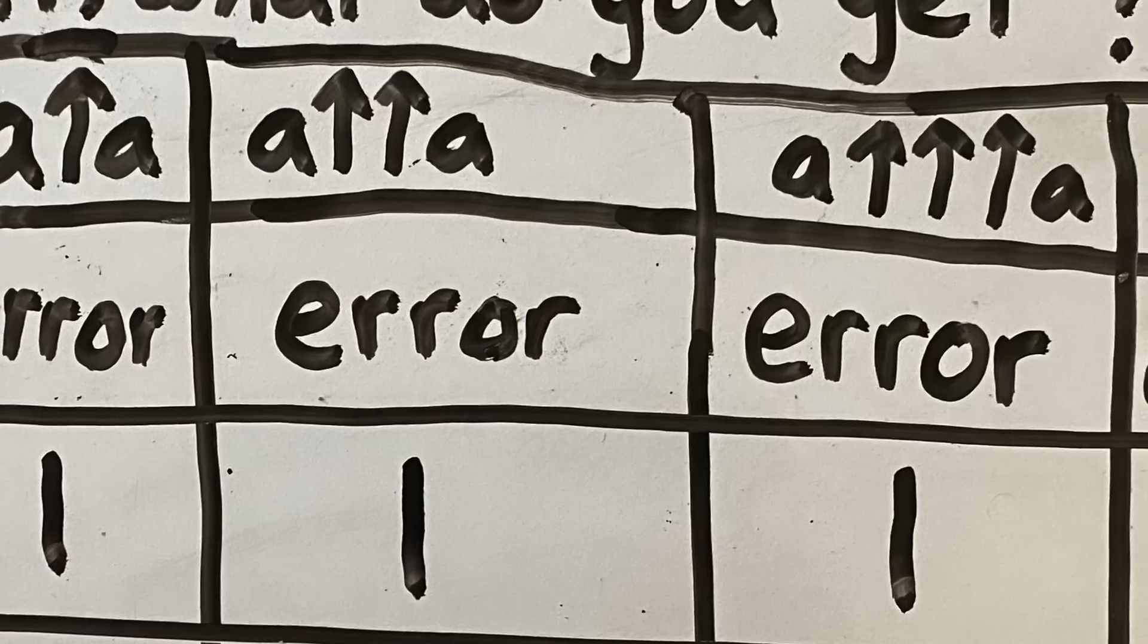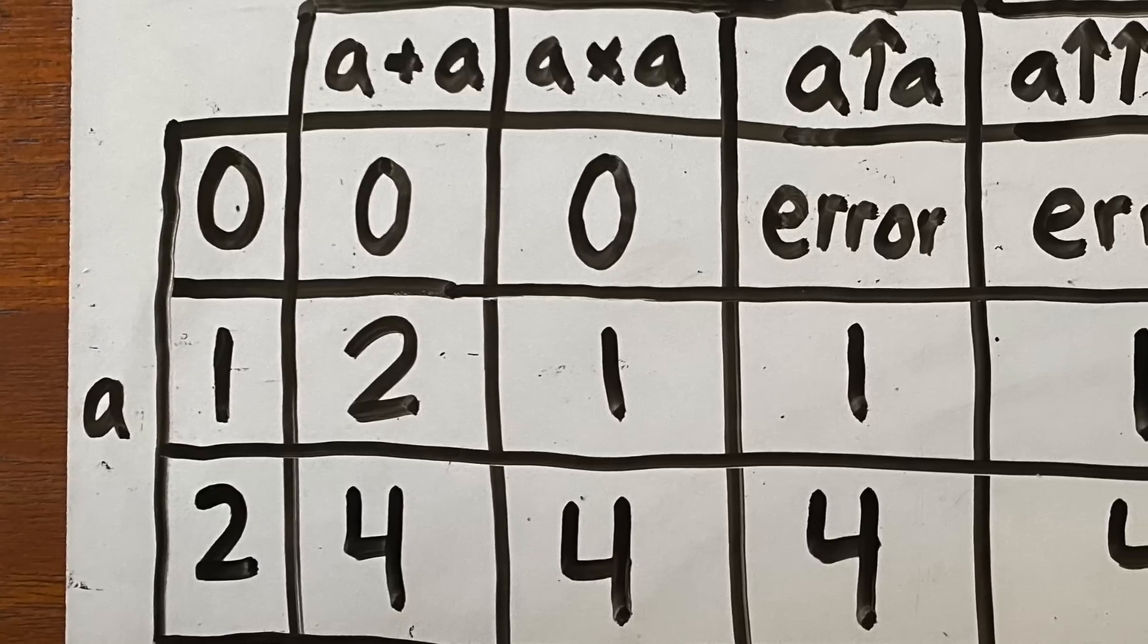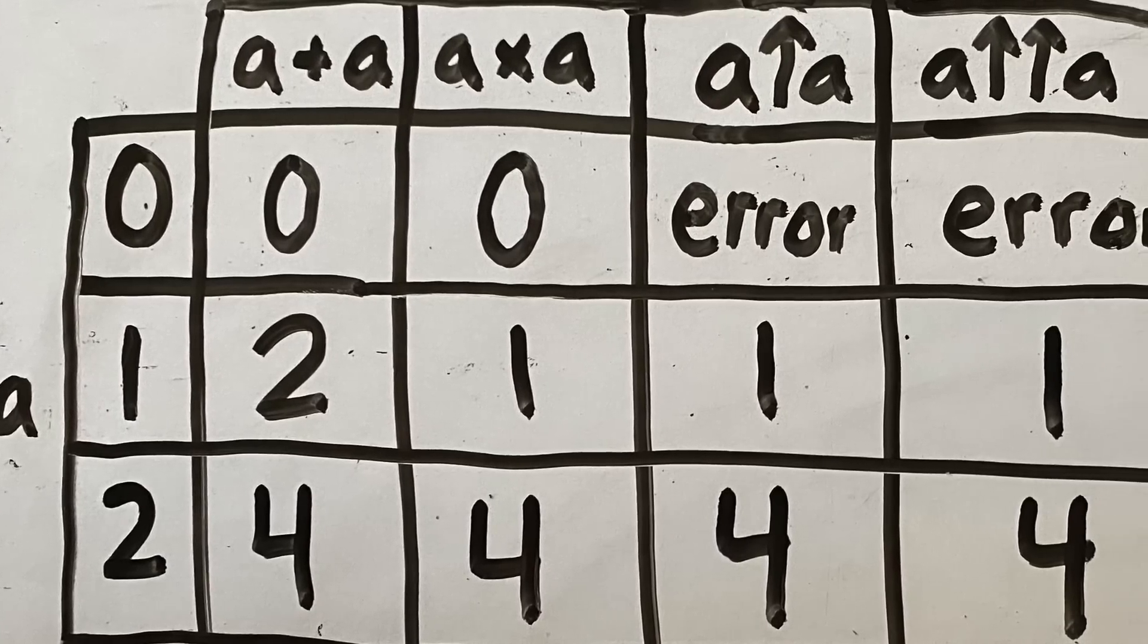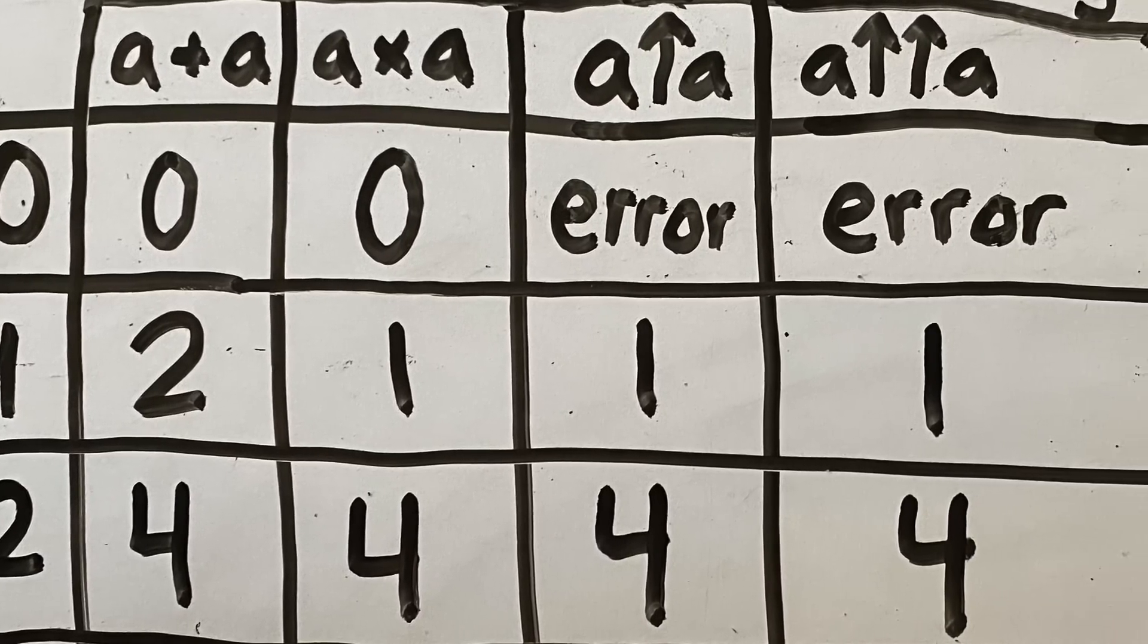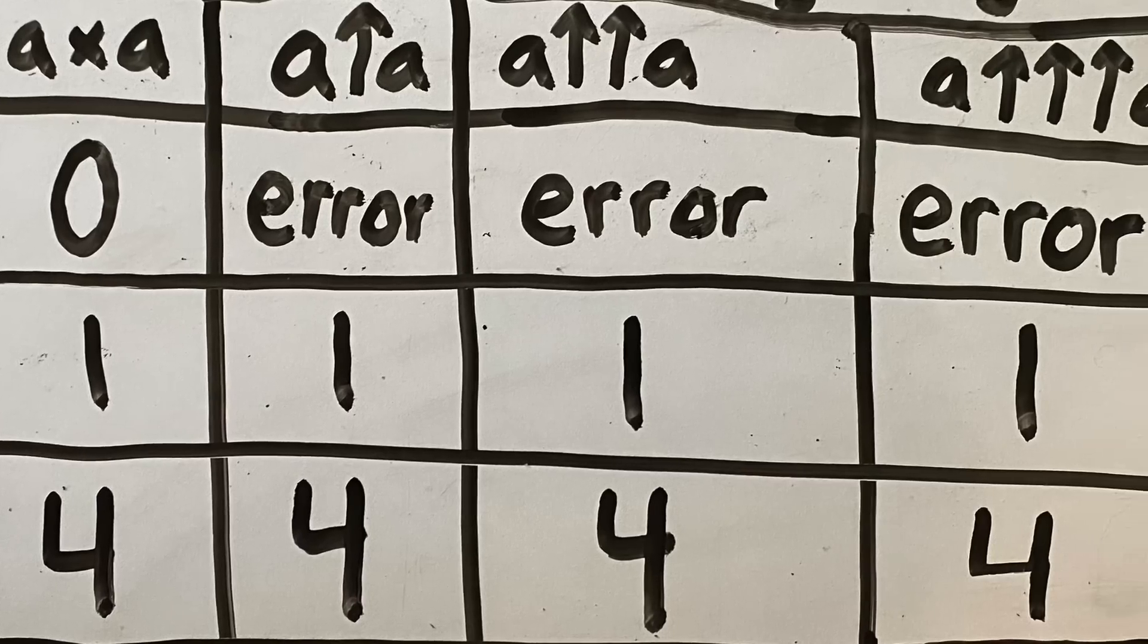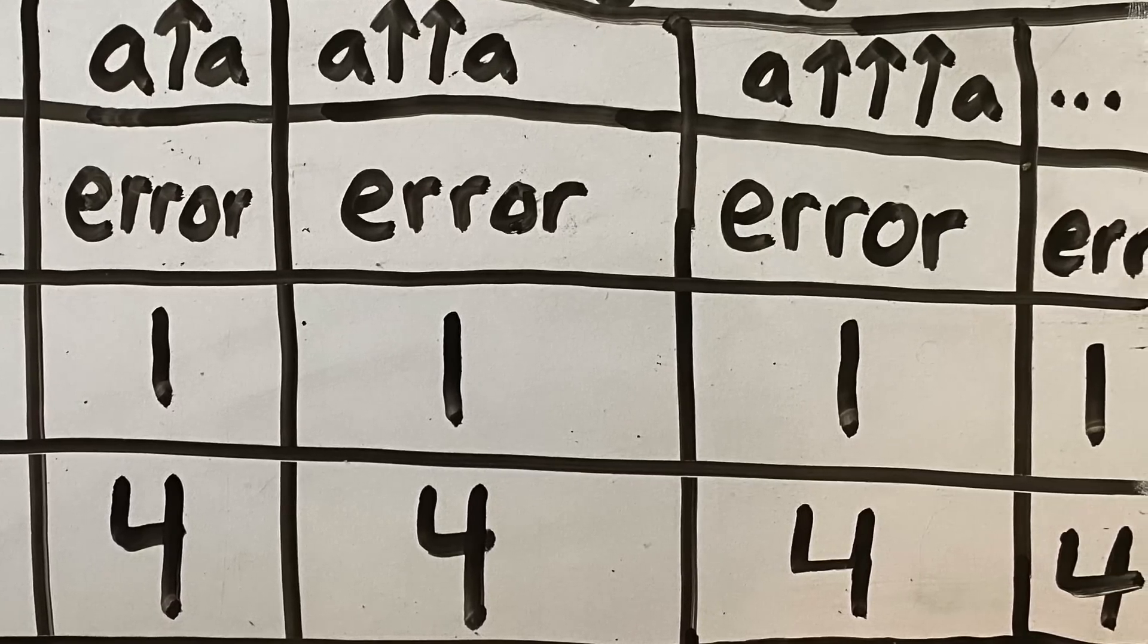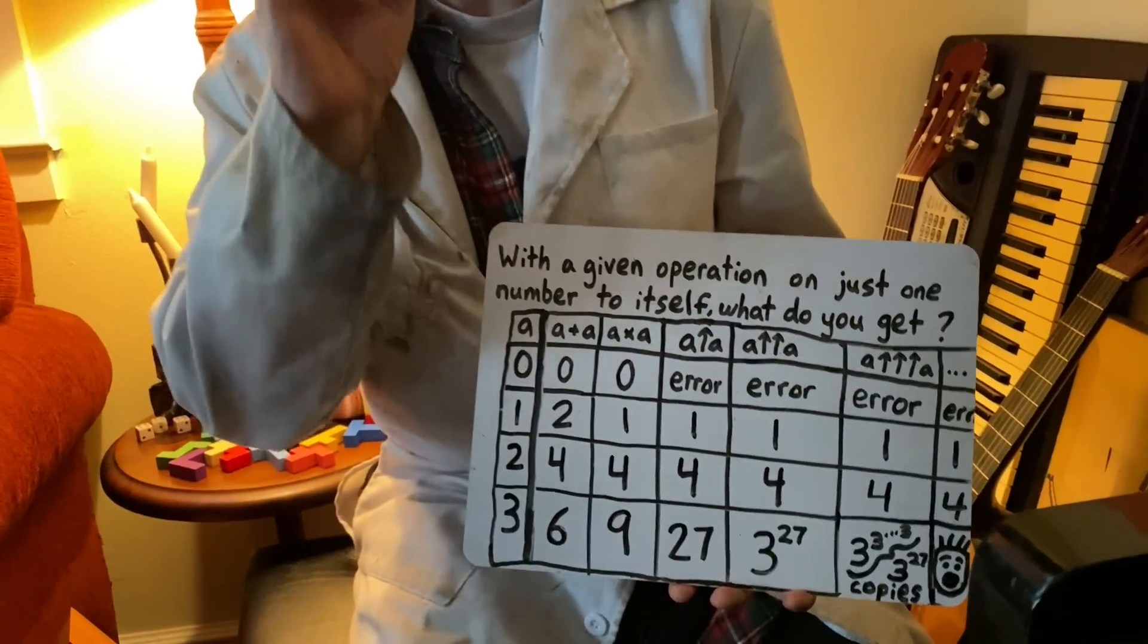Two plus two we get up to four. It hops up a bit but it stays there. Two times two is four, two to the second power is four, two tetrated to two or any of the future ones end up just being four. So in this game it takes three to grow.